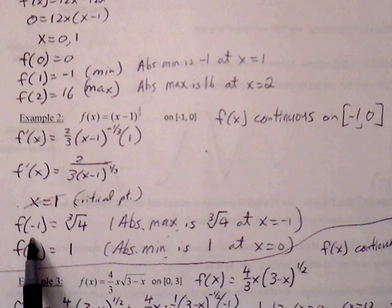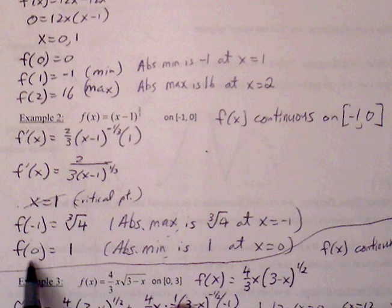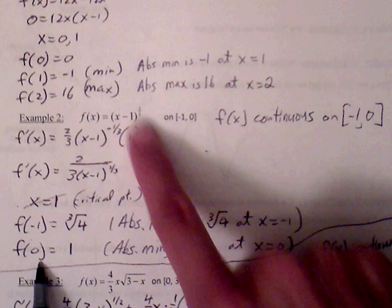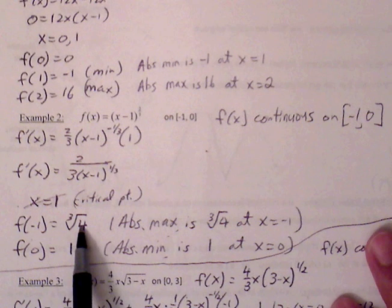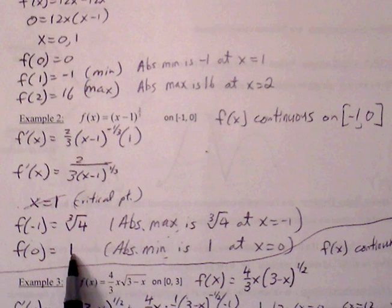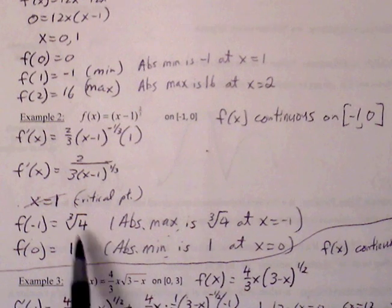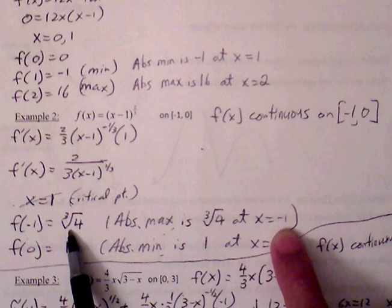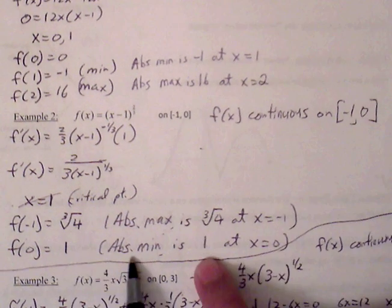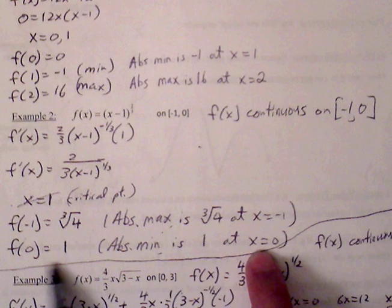Plugging negative 1 into the original function gives the cube root of 4. Plugging 0 gives 1. Since cube root of 4 is larger than 1, the absolute maximum is cube root of 4 at x equals negative 1, and the absolute minimum is 1 at x equals 0.